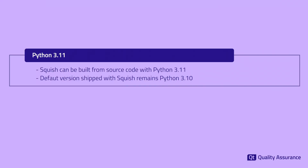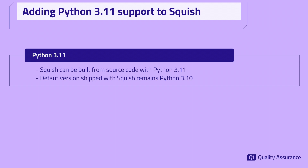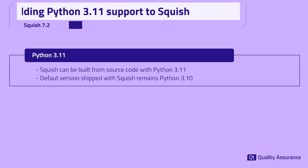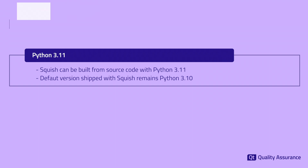In response to user feedback, we are pleased to announce that Squish can now be built with Python 3.11. While the default version shipped with Squish remains Python 3.10, we are here to support you in case you require Python 3.11 for your testing needs.